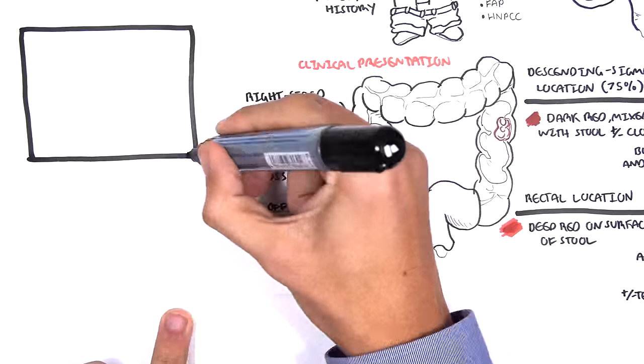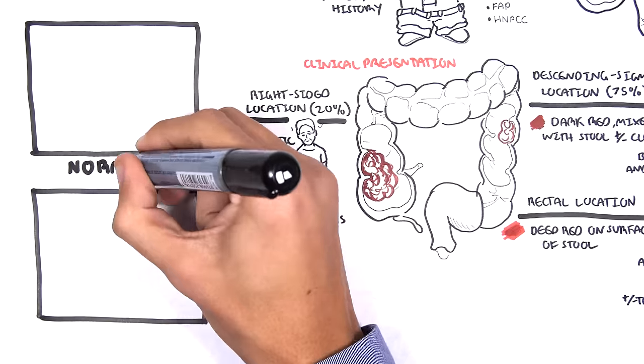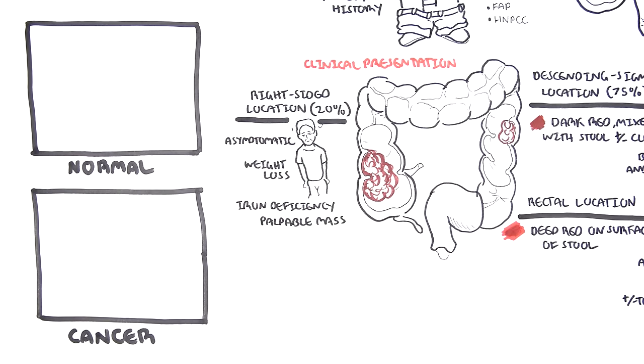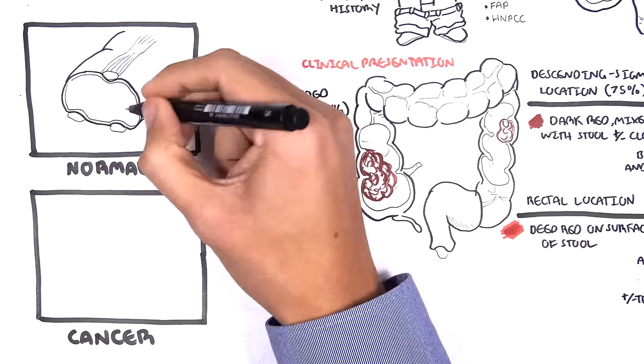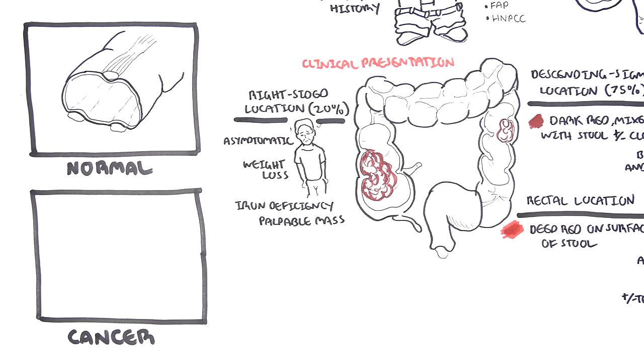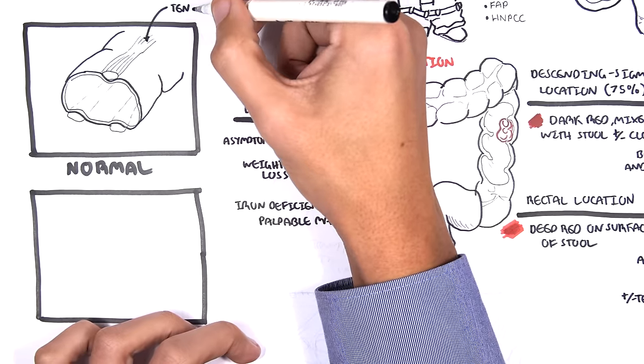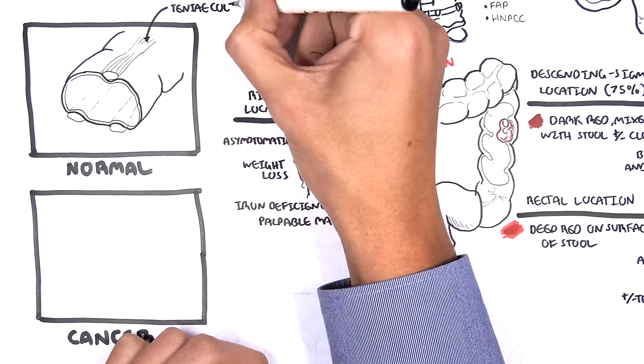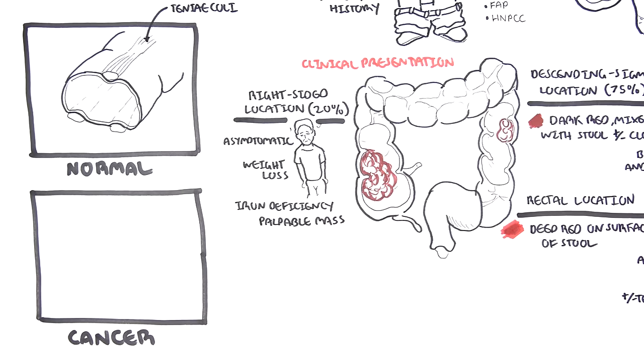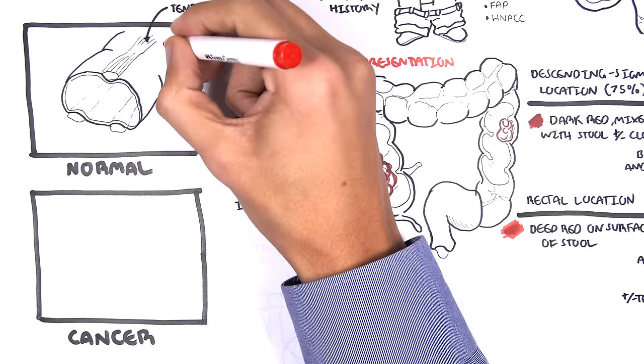The colon is an amazing organ. The general macroscopic differences between normal and cancerous. The colon have tinae coli, which are separate longitudinal ribbons of smooth muscles on the outside of the ascending, transverse, descending, and sigmoid colons. The tinae coli contract lengthwise to produce the haustra, the bulges in the actual colon.